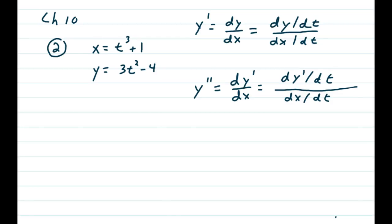Chapter 10, problem 2. x is equal to t cubed plus 1. y is equal to 3t squared minus 4.